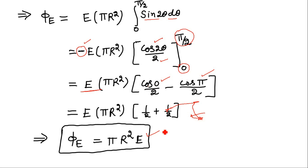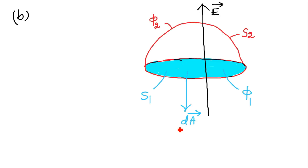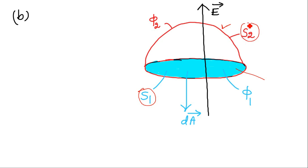This concludes part A. We now solve the same problem using Gauss's law. Since Gauss's law applies only to closed surfaces, we include the circular base surface as well. Let the circular surface area be S1 and the hemispherical surface area be S2. We need to find the flux φ2 through S2, and we denote the flux through S1 as φ1.